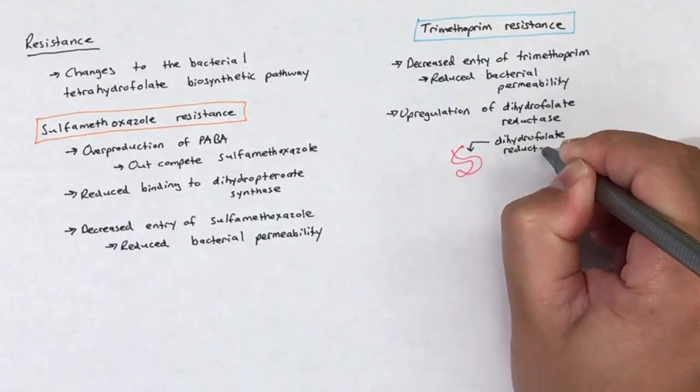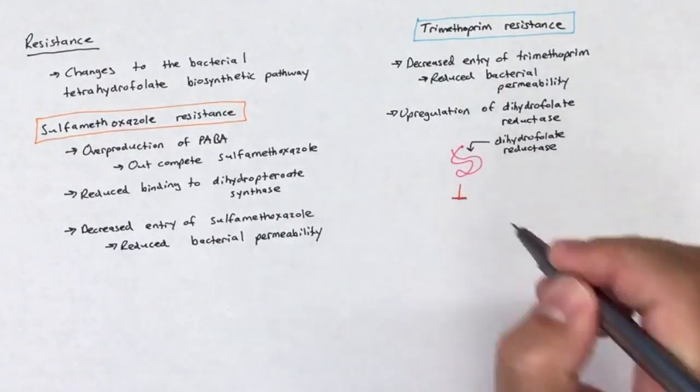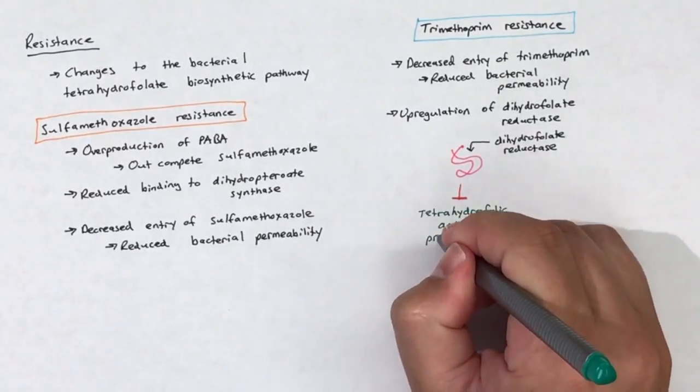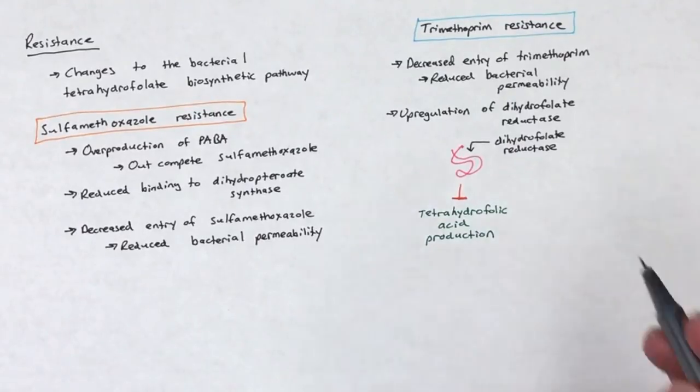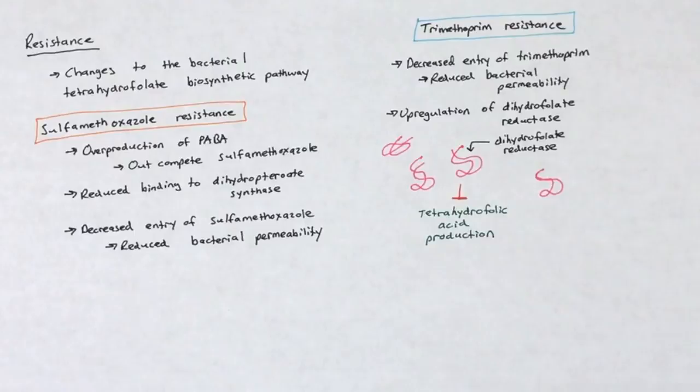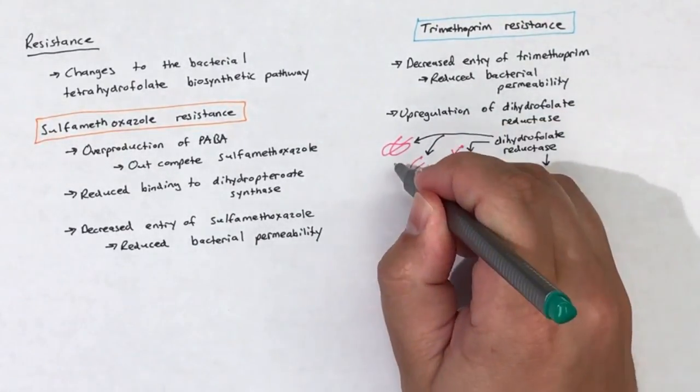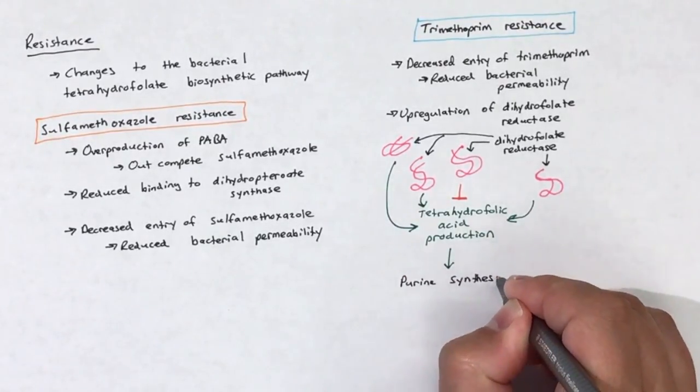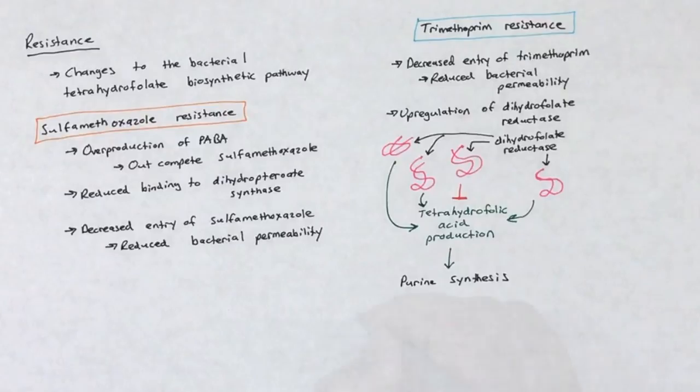A second mechanism of resistance to trimethoprim is the bacterial upregulation of dihydrofolate reductase. An increased amount of dihydrofolate reductase will spread trimethoprim too thin and will allow some functional dihydrofolate reductases to slip through the trimethoprim inhibitory net. This mechanism will lead to the continued synthesis of tetrahydrofolic acid and purine synthesis will continue.